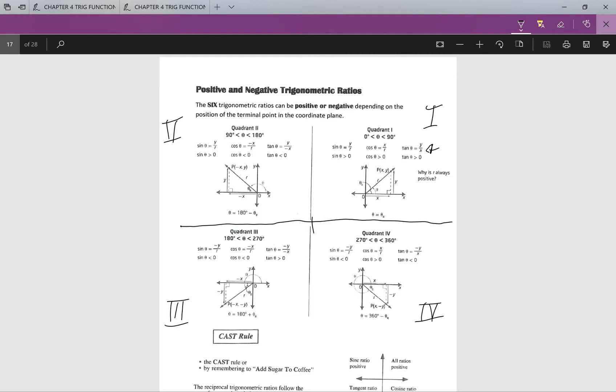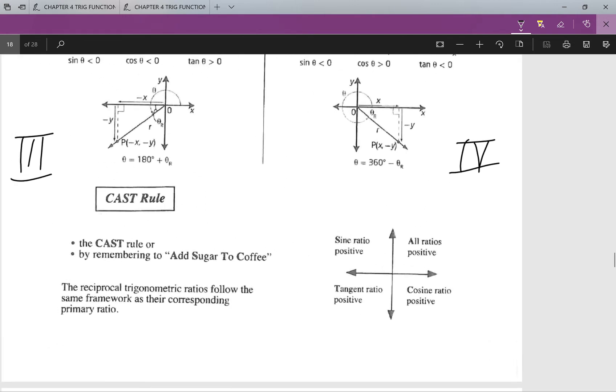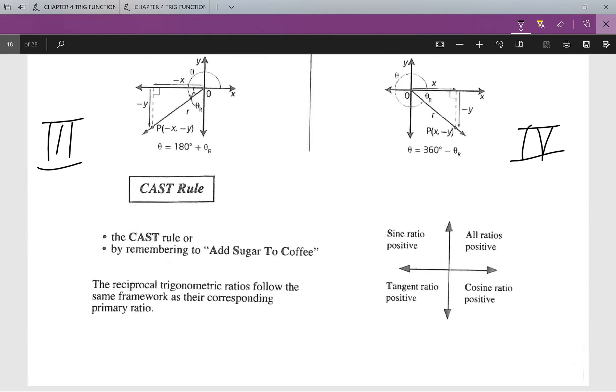The second most important thing to take from this is, because of the way that we have the ratios, in quadrant one both x and y are positive, quadrant two y is positive and x is negative.